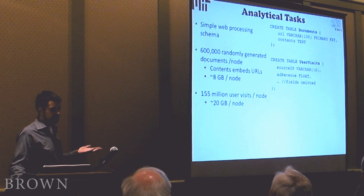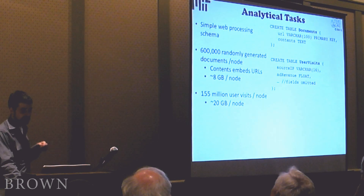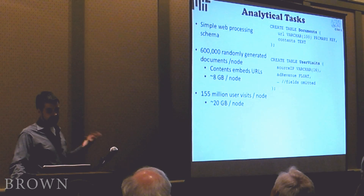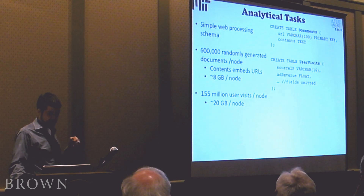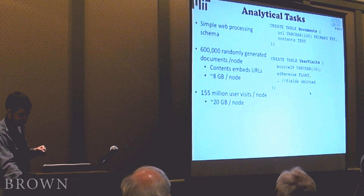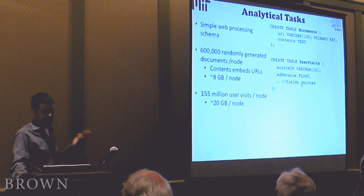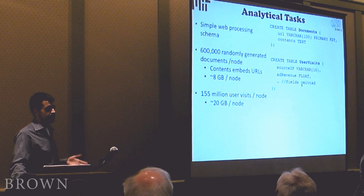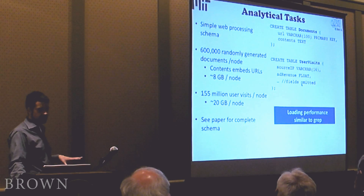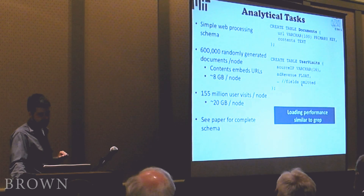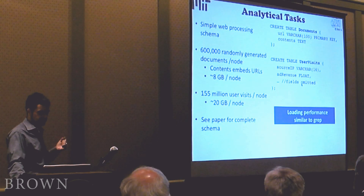We also have a user visits table representing all accesses made to a given URL stored on a particular machine. Each node has about 155 million user visits, representing about 20 gigabytes of data. The table has about 10 columns; the two I'll use in the example query are source IP and ad revenue, where ad revenue represents the amount of ad revenue generated by a visit to a page. The loading performance is very similar to what we saw in GREP — Hadoop is substantially faster than the database systems because it doesn't have to do much loading work.